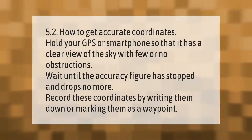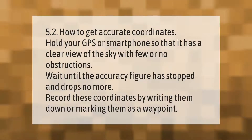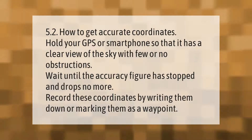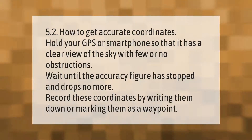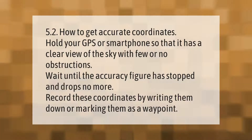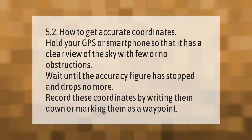5.2: How to get accurate coordinates. Hold your GPS or smartphone so that it has a clear view of the sky with few or no obstructions. Wait until the accuracy figure has stopped and drops no more. Record these coordinates by writing them down or marking them as a waypoint.